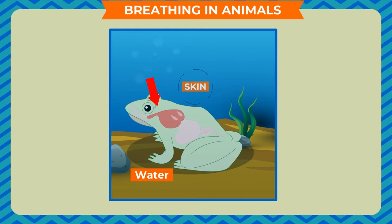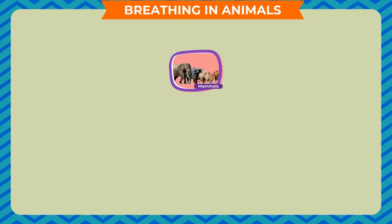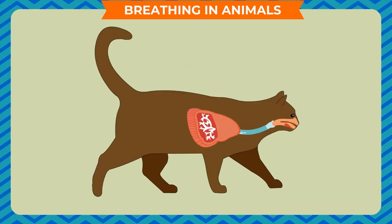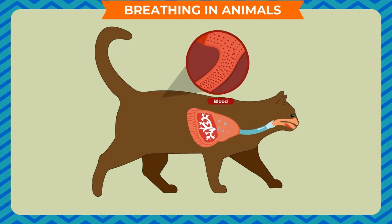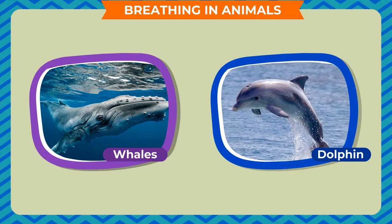Organs for breathing: mammals, reptiles, and birds breathe through their lungs. The function of the lungs is to transport oxygen from the air inhaled through the nose to the blood, and to release the carbon dioxide from the blood and exhale it through the nose. All mammals breathe through lungs.